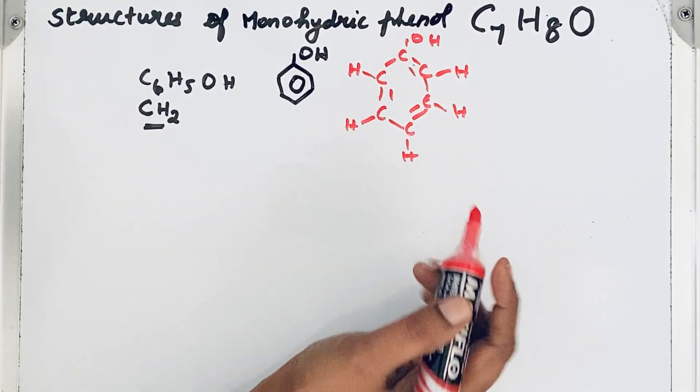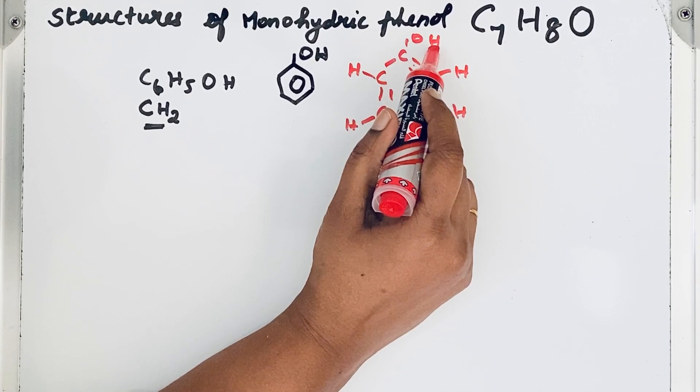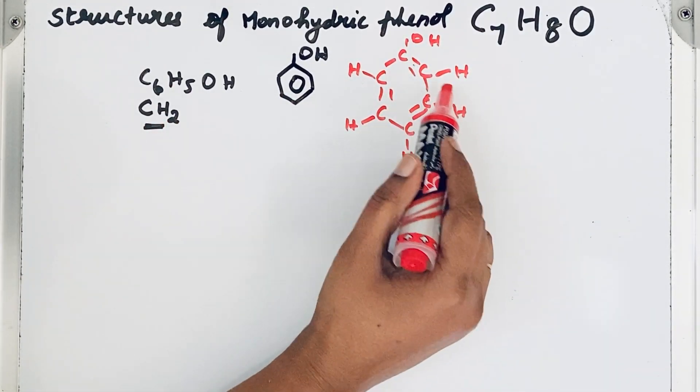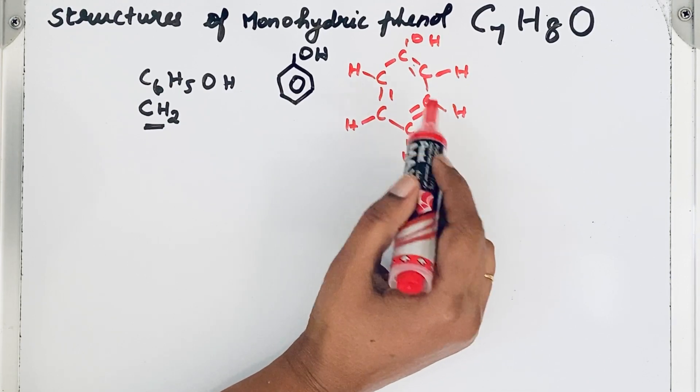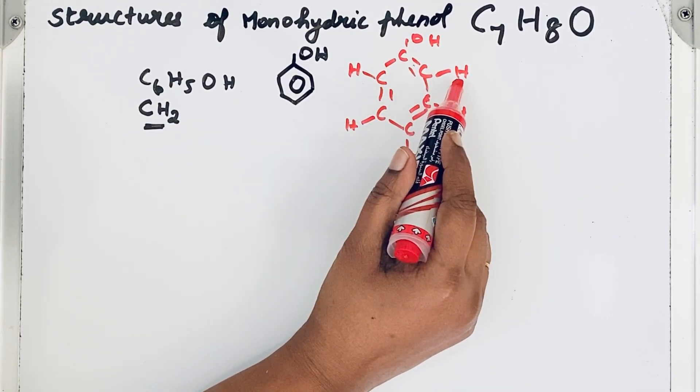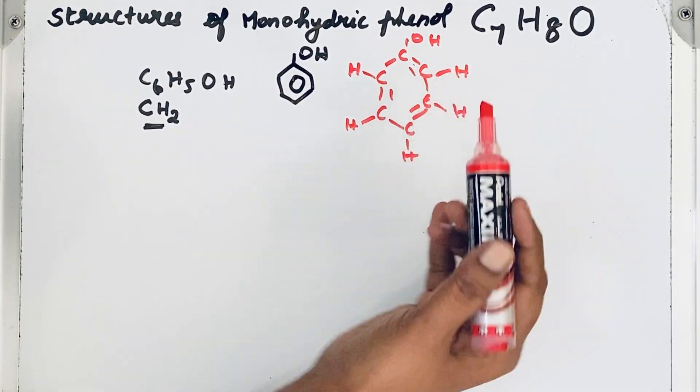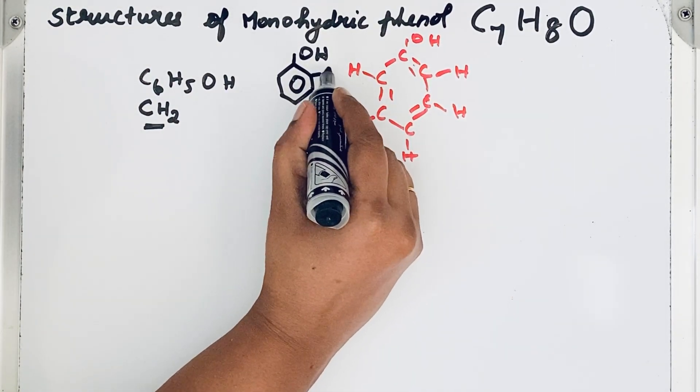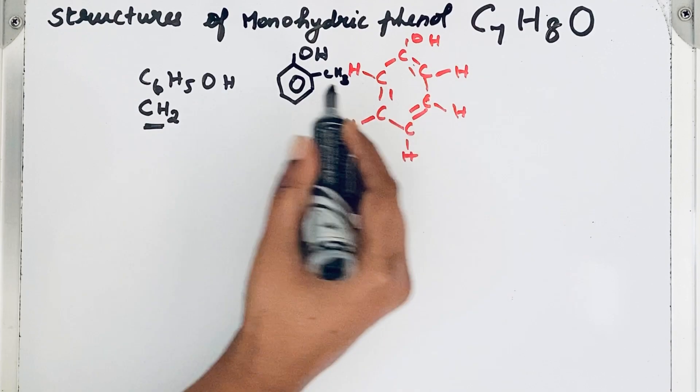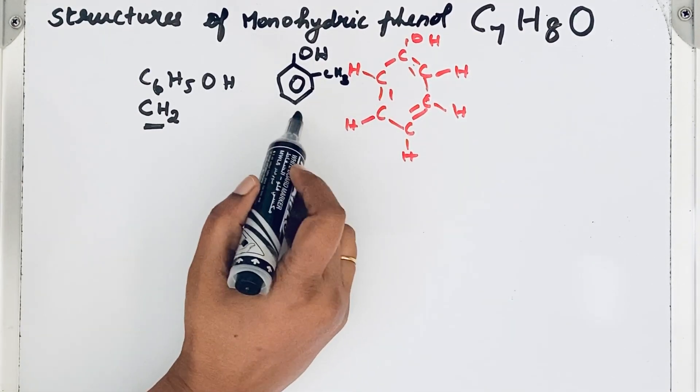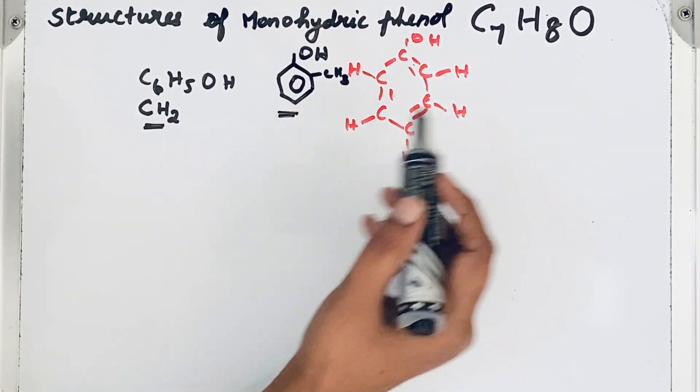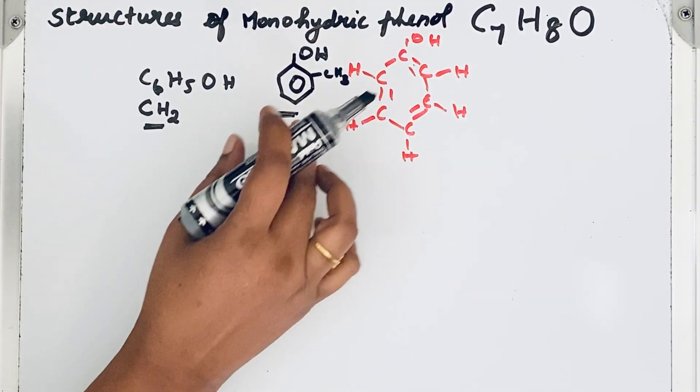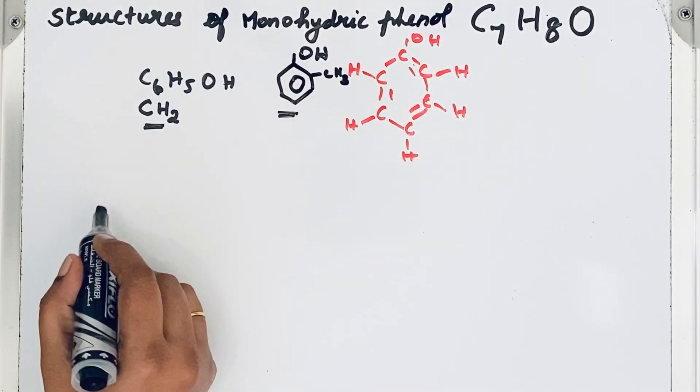If you look at the phenol, you can see one hydrogen atom is replaced by OH group. In the same way, now this CH2 group can be added to any one of the carbons. When it is added, we will get CH3 group. Now the phenol, you can add that CH3 group anyway. This is the C7H8O. Now possible structures we are going to try.